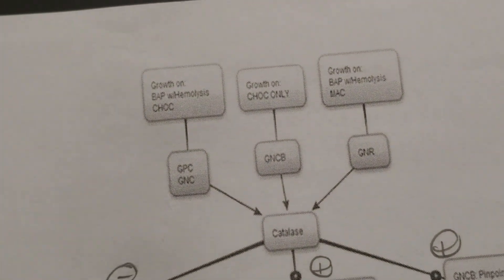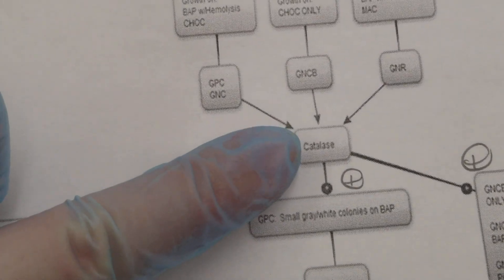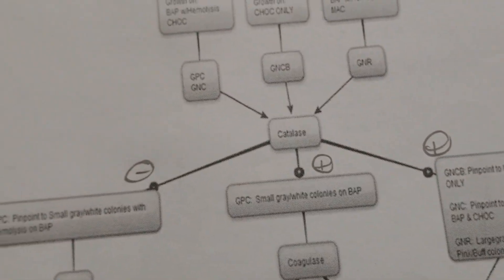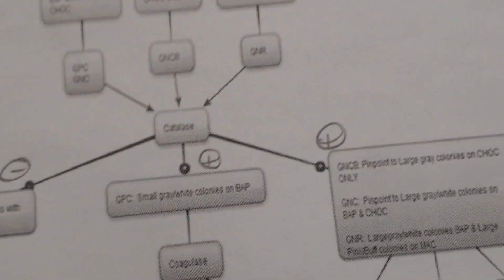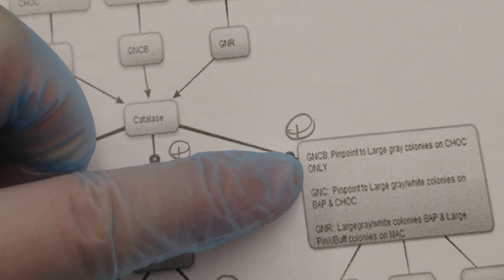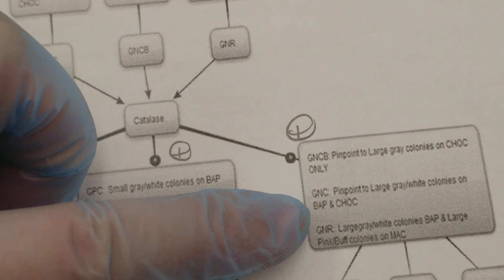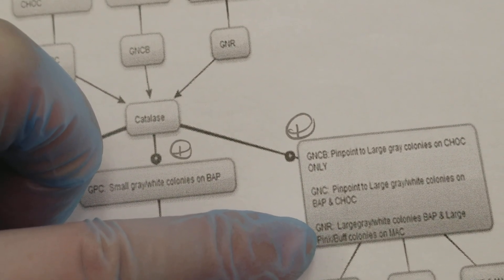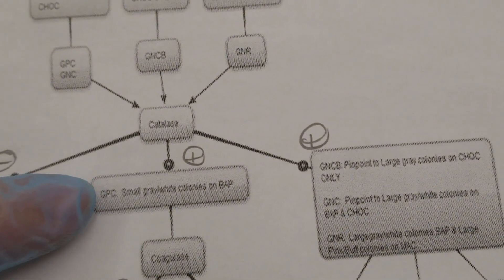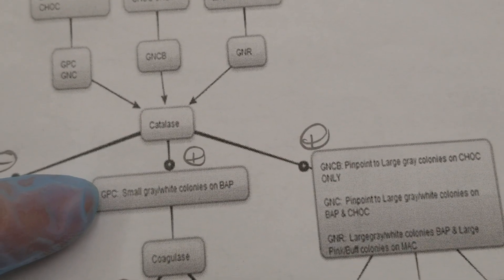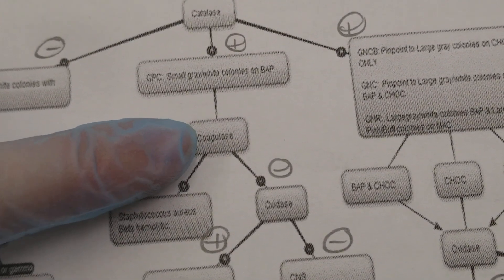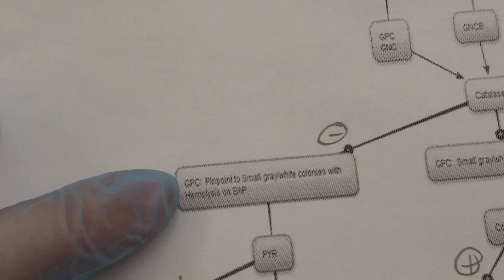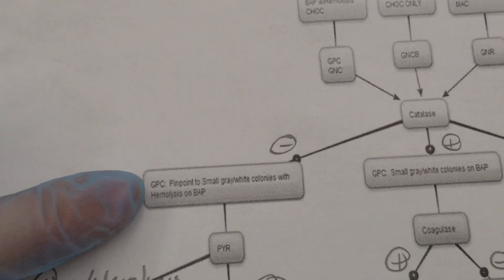The next thing we do is catalase. Depending on that result and the gram stain, we go in different directions. If it's catalase positive, we're looking at gram negative cocobacilli — thinking Haemophilus — gram negative cocci such as Neisseria and Moraxella, gram negative rods including Enterobacteriaceae and non-fermenters, and for gram positive cocci we're looking at Staphylococcus and Micrococcus. The catalase negatives are going to be your Streptococcus and Enterococcus.